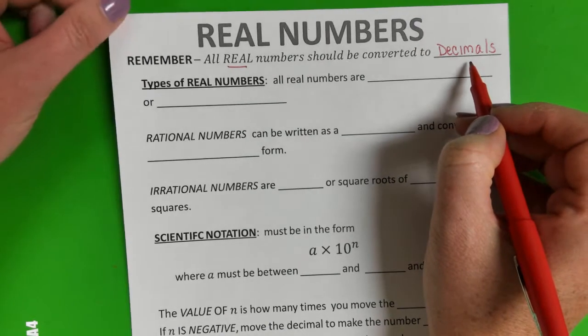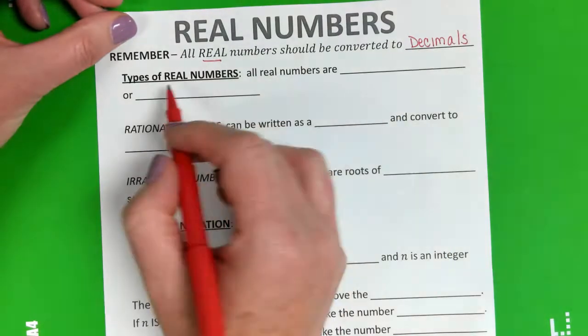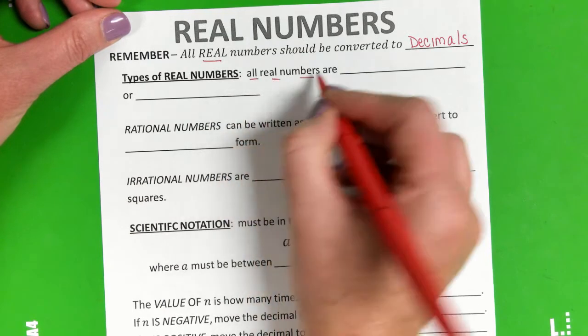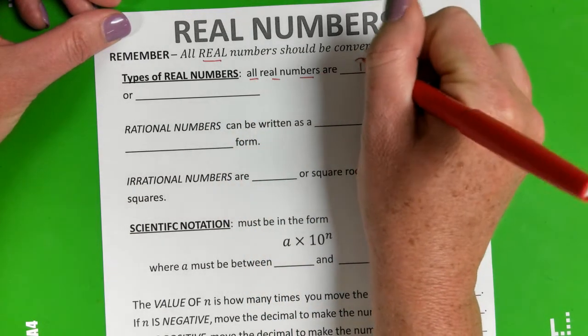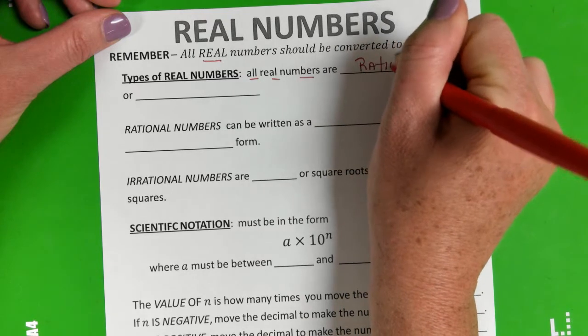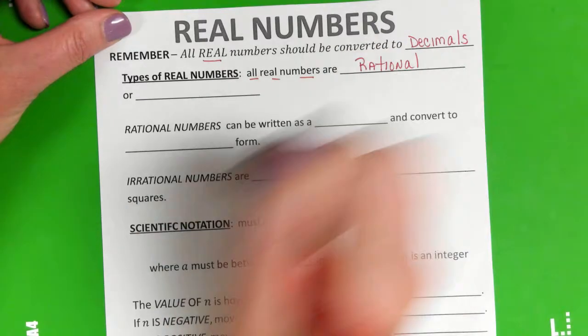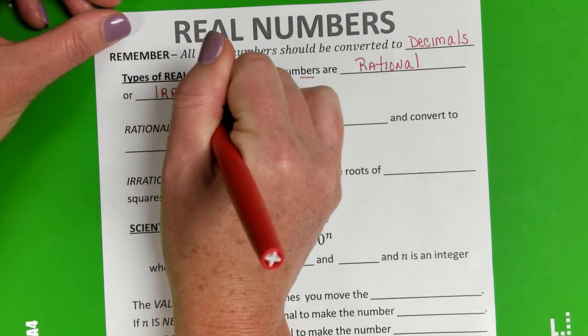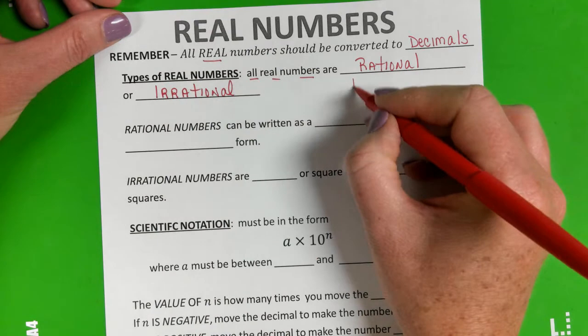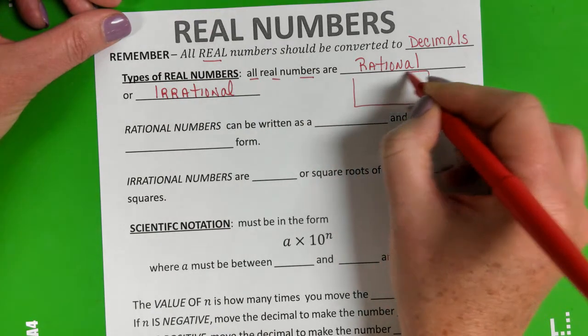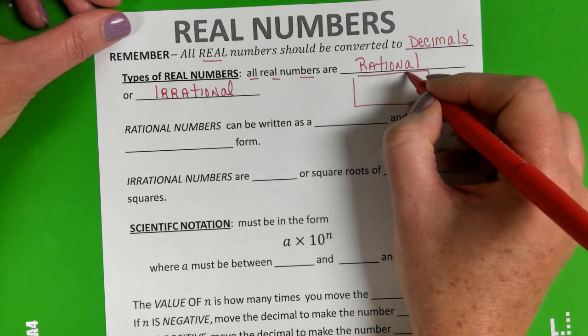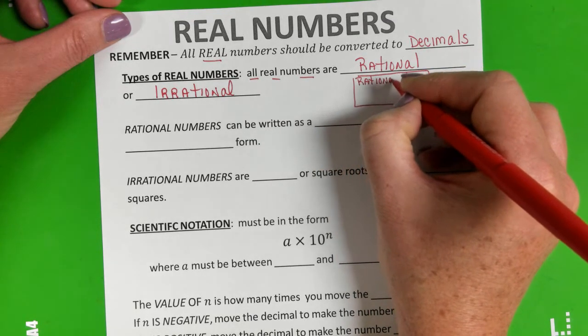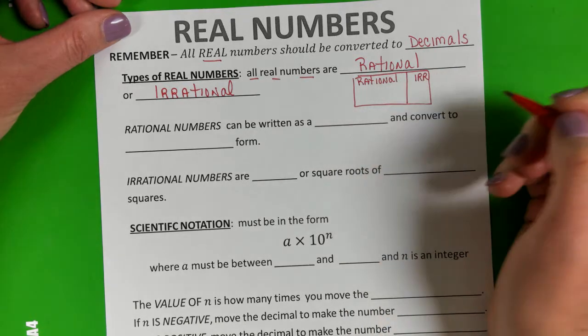We want to change them to decimals using your calculator. We have different types of real numbers. Remember all real numbers are either rational—it's either a rational number or it is an irrational number. We looked at a Venn diagram and rational numbers make up the bigger group, so rational, and then irrational is over here in a smaller circle.